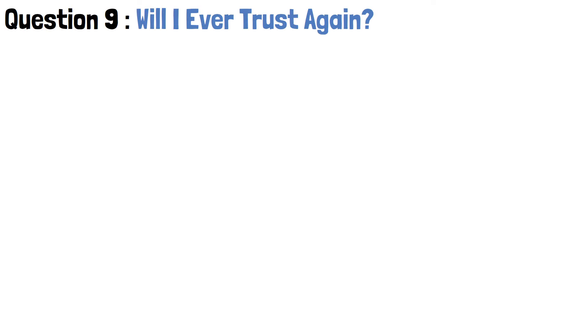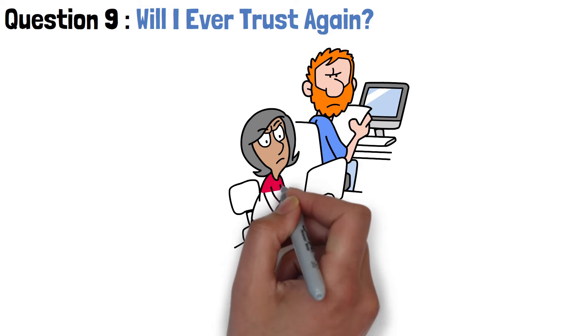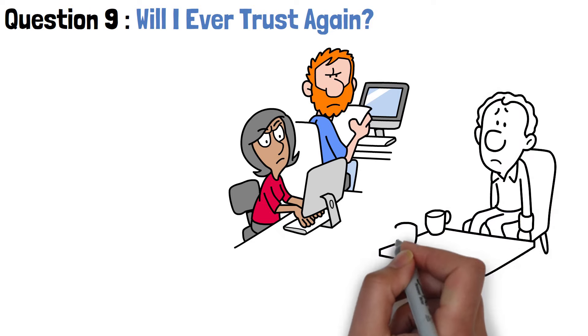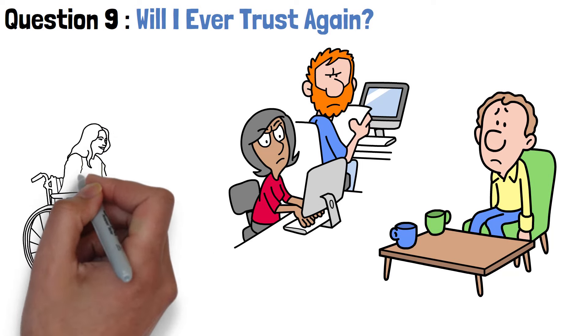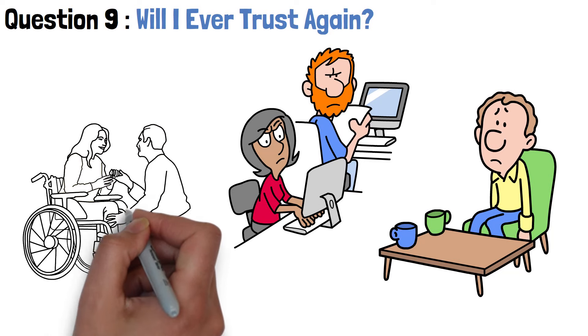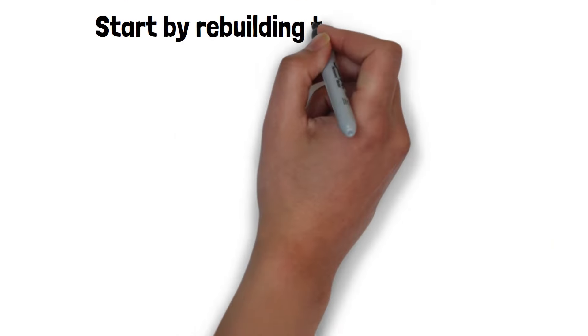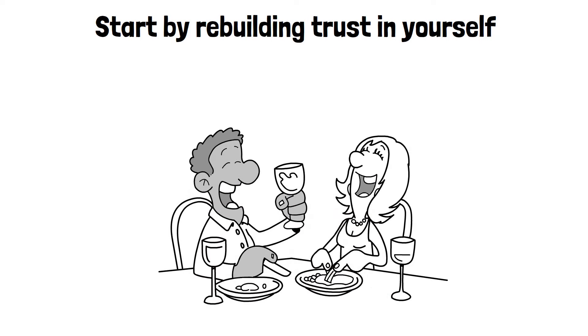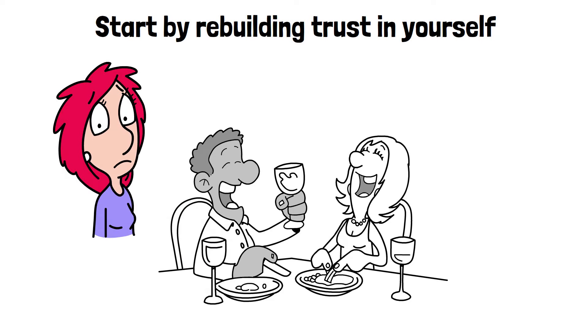Question 9. Will I ever trust again? One of the most challenging aspects of healing from a breakup is rebuilding trust, both in oneself and in others. After experiencing the pain of betrayal or heartbreak, it's natural to feel guarded and hesitant to open up to others. Trust, once broken, can take time to repair and rebuild. But it's important to remember that trust is not all or nothing. It's a gradual process that unfolds over time, influenced by our experiences and interactions with others. Start by rebuilding trust in yourself. Honor your instincts and boundaries and practice self-compassion as you navigate the complexities of relationships.